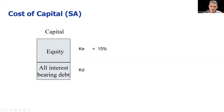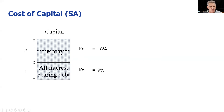In South Africa, a reasonable rate for shareholders is going to be something like 15%. A reasonable bank rate would be something like 9%. We also need to know the weighting of debt and equity on the capital side of our balance sheet. I'm going to assume that we've got a ratio of one lot of debt to two lots of equity — and remember, this is the market capitalization of the shares.